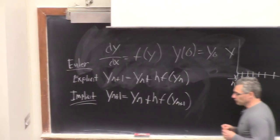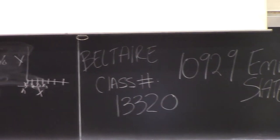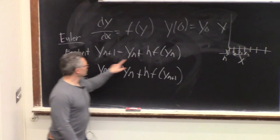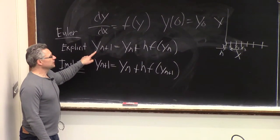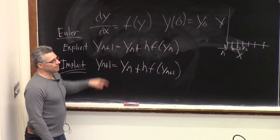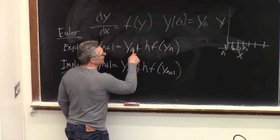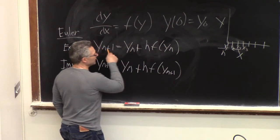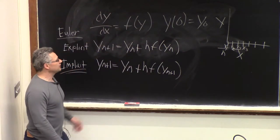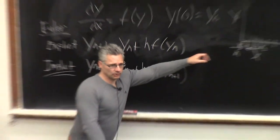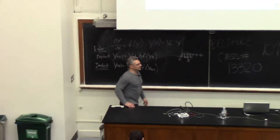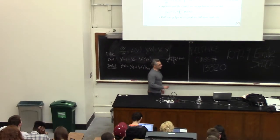There are other methods called multi-step methods. A method like this says: give me the value at y_n and I'll give you the value back at y_{n+1}. This is called a single-step method — it uses the value immediately before to get the next value. It doesn't need y_{n-1} or y_{n-2} or anything like that.